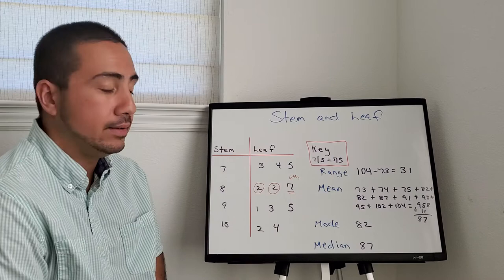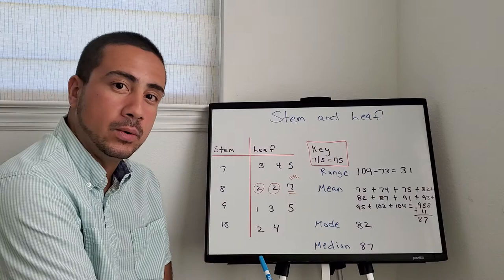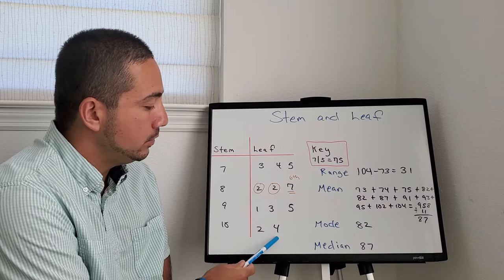This is how it's read. The key says that 7 is the stem, 5 is the leaf, equals 75. So this is 73, 74, 75, so on and so on.